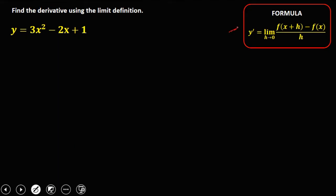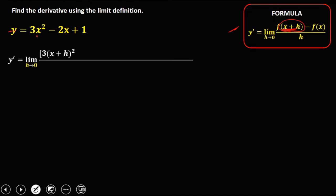From this formula, observe that in the numerator we have two terms. The first term has x equal to x plus h. So from the given, we have y prime equals the limit as h approaches 0. Since in the first term x is replaced by x plus h, substitute into the equation: 3 times (x plus h) squared minus 2 times (x plus h) plus 1. Then for the second term, minus f of x, which is the given expression. All over h.